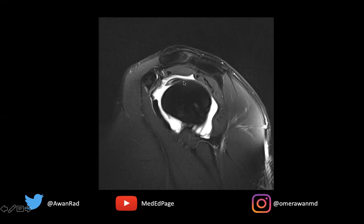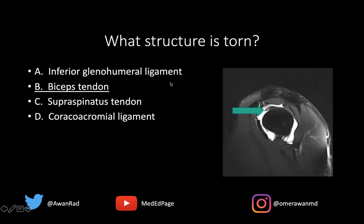Along the supraglenoid tubercle of the glenoid process of the scapula. So this is a biceps tendon tear, because we have increased signal within the substance of the biceps tendon here.